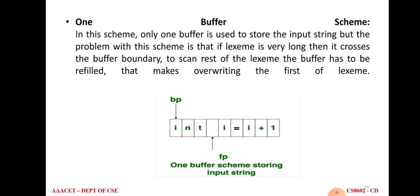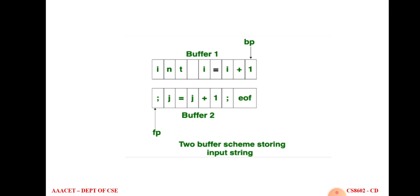There are two concepts: the one-buffer scheme and the two-buffer scheme. In the one-buffer scheme, there is only one buffer for filling the source program input. The problem is if the source program is very long, it crosses the buffer boundary, and the rest of the lexeme may overwrite the beginning of the lexeme. That is why the two-buffer scheme is used, where the buffer is divided into two halves, each holding 1024 or 4096 characters. Additionally, a sentinel character — EOF, end of file — is placed at the end of each half to indicate the end of that buffer half.